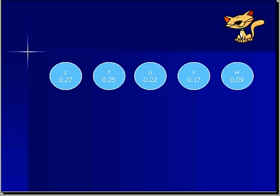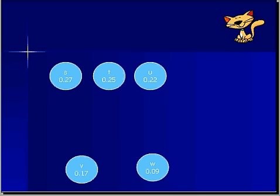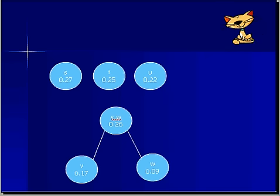What you do, mechanically speaking, is to grab the two lowest frequency nodes, V and W in this case, and connect them into one conjoined node that has a frequency equal to the sum of the two individual frequencies. 0.17 plus 0.09 equals 0.26 for this combined VW node.